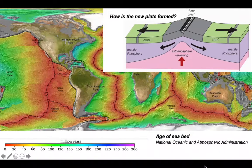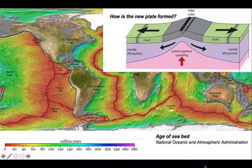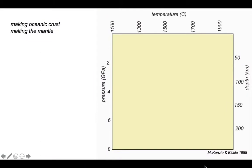This crust must form somehow from the mantle that underlies the ridges. This involves melting and that melt migrating to the surface where it freezes to become the basaltic crust.